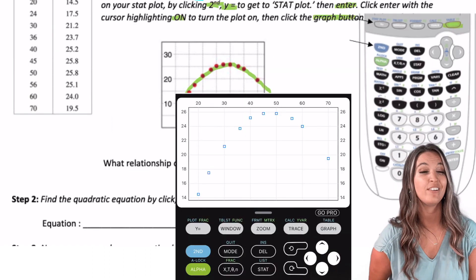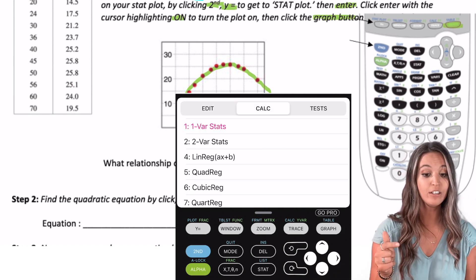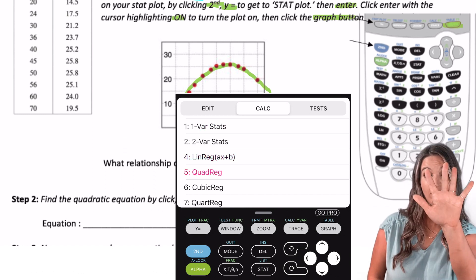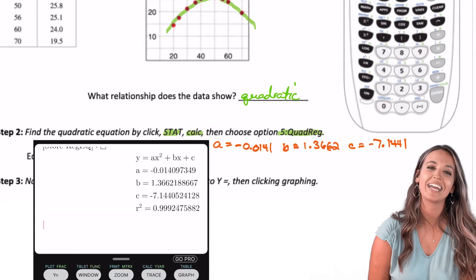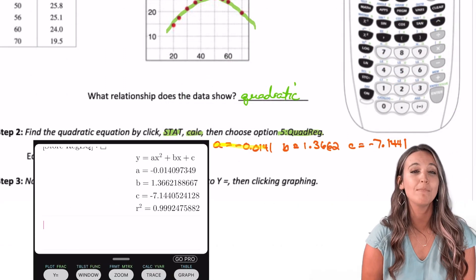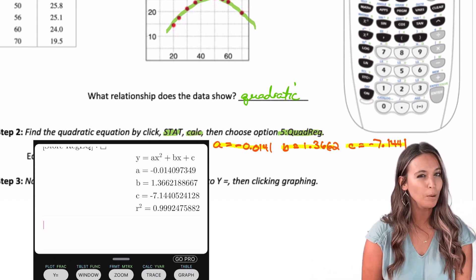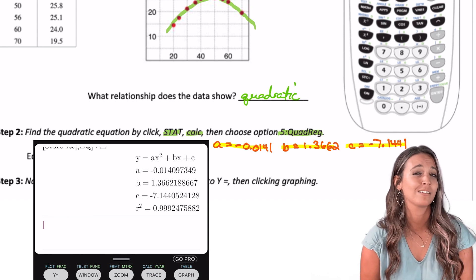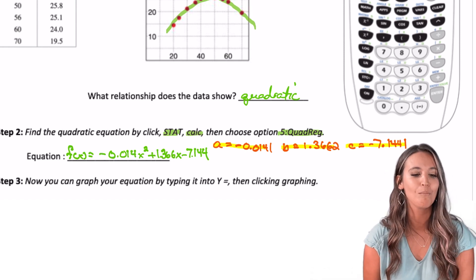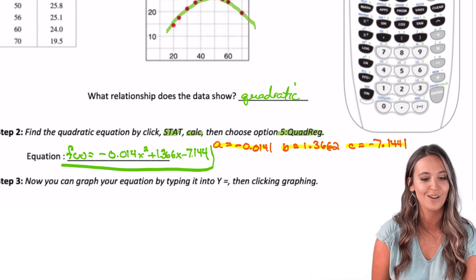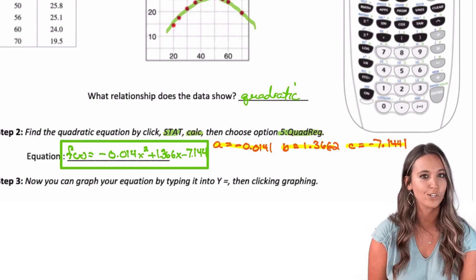That means we can find a quadratic equation by clicking stat, calc, then scrolling down to option five, quadreg. This stands for quadratic regression. And look at that! My calculator gives me values for a, b, and c of the quadratic function, ax² + bx + c. For our purposes, we're going to take this three decimal places out. The more decimal places we have, the better our regression. f(x) = -0.014x² + 1.366x - 7.144. There's our equation.